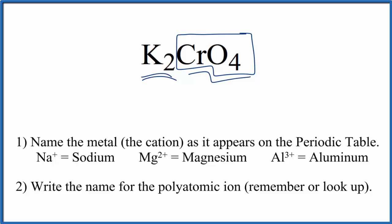We have our metal and our polyatomic ion, so we're going to use these rules here to write the name for K2CrO4. First, we name the metal as it appears on the periodic table. K, that's potassium.